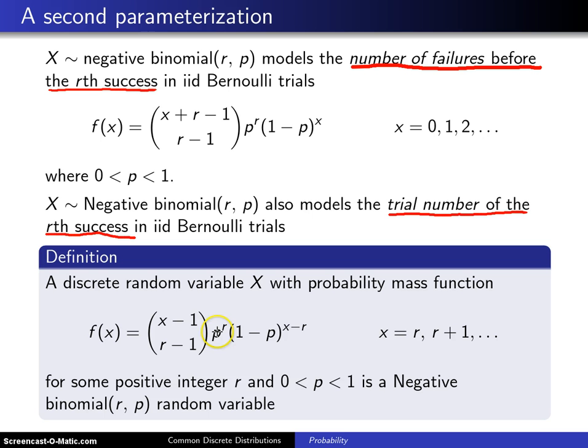And the derivation goes along the same lines. Notice that now we have still the p to the r for the r successes. The 1 minus p now gets raised to the x minus r power, and this combination becomes this.